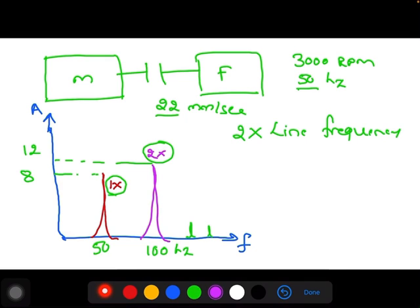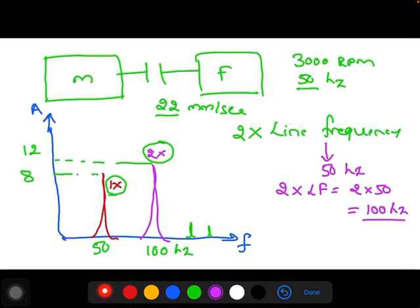In India, the line frequency for electrical is 50 hertz, so in an electrical defect the spectrum will have 2x line frequency, that is 2x 50 hertz, giving you 100 hertz in the spectrum. This 100 hertz may be electrical defect, that is 2x line frequency, or it may be 2x rpm, maybe misalignment.